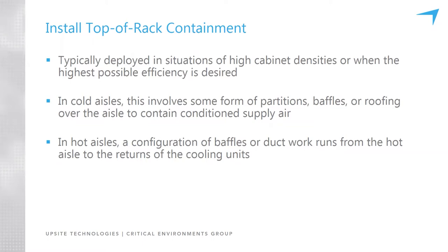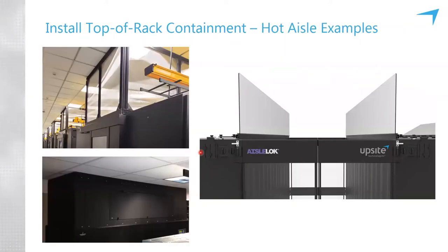Top-of-rack containment is also potentially very important for other room layouts where there may be a low ceiling and cooling units on opposing walls, causing exhaust air from a hot aisle to flow over the top of a cold aisle to get back to the cooling units. Containment solutions will always provide some improvement and enable further reduction of fan speeds and potentially raising cooling unit set points to further optimize the room.